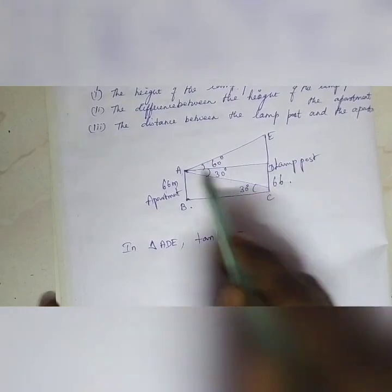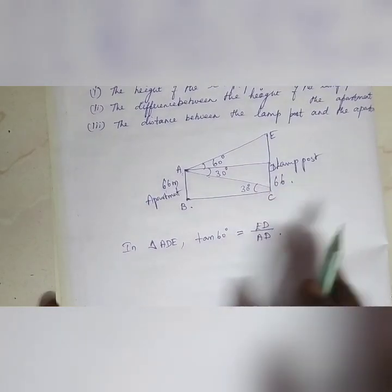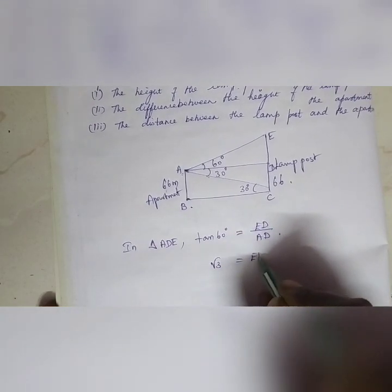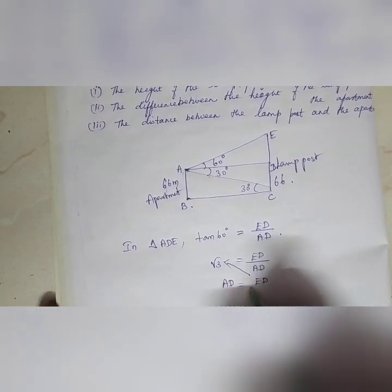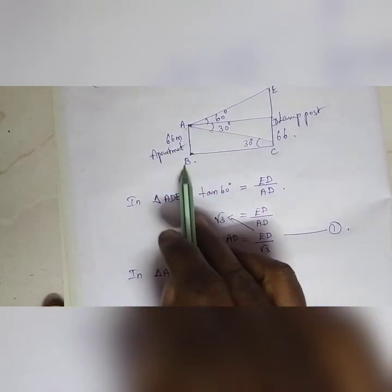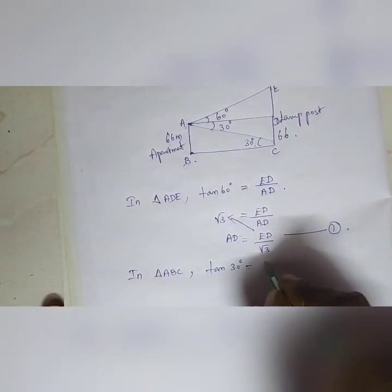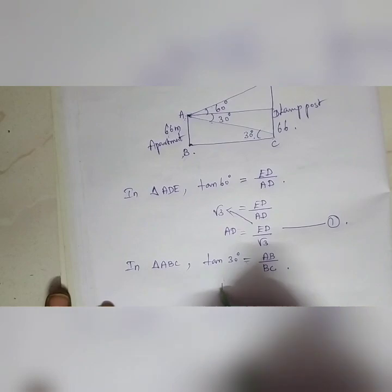So tan 60° = DE/AD. In triangle ADC, tan 30° is equal to the opposite side AB divided by BC. So tan 30° = AB/BC, which gives us AB equal to 66 divided by BC.